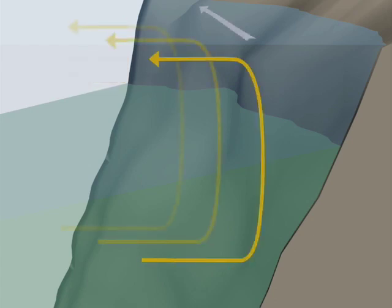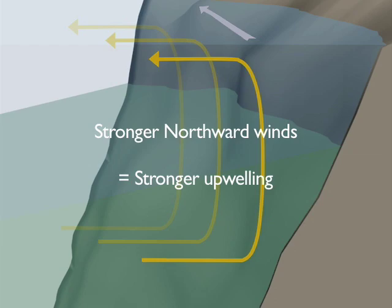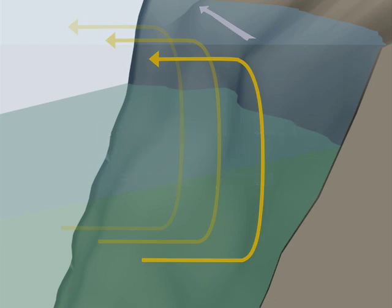Since the northward winds are stronger in an El Niño year, the upwelling forces are also stronger. Some believe that the Peruvian upwelling weakens during an El Niño event, when in fact it becomes stronger. Field data confirm this effect.